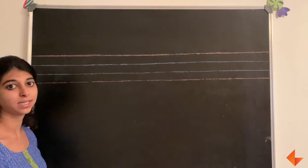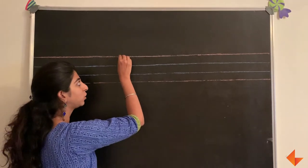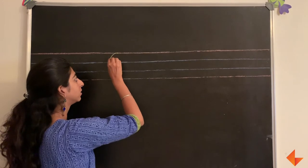This is how you write the letter O. Start from the top and make a circle.